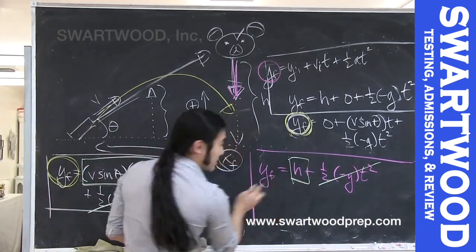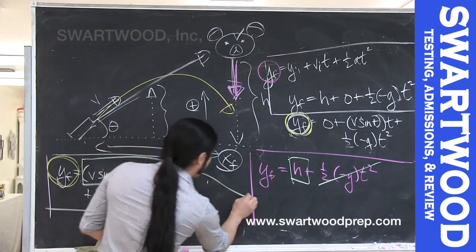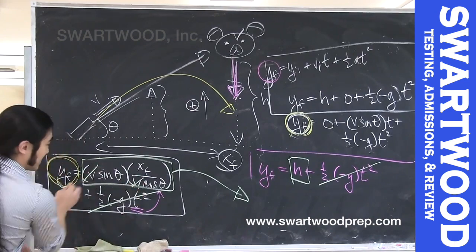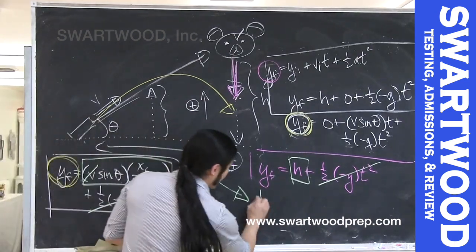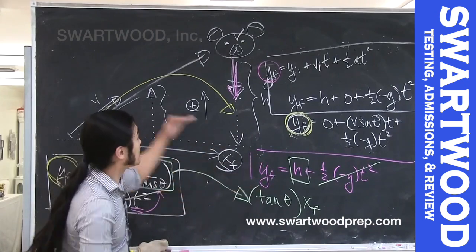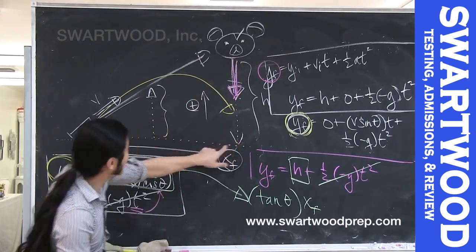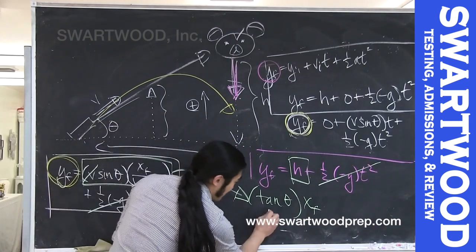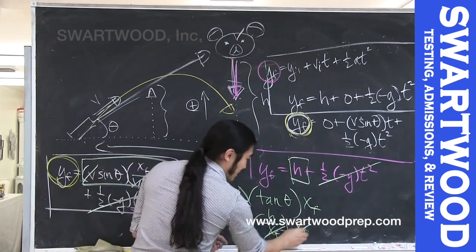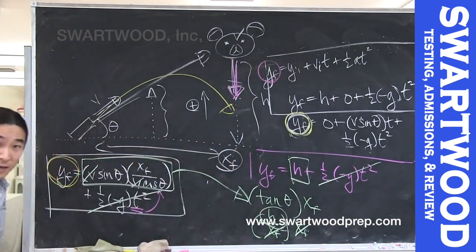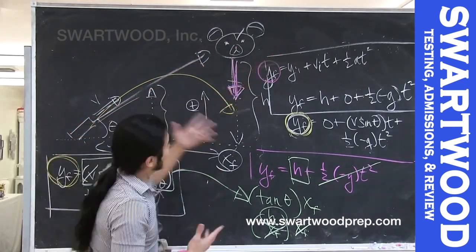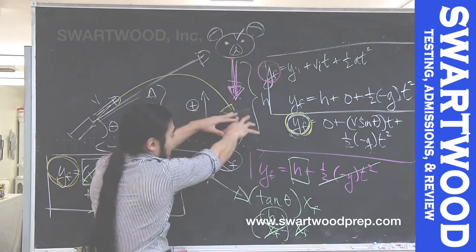So all we need is: (v·sinθ / (v·cosθ))·x_final = h. The two v's cancel, and sine over cosine is tangent, giving us tanθ · x_final = h. But tangent is opposite over adjacent — opposite is h, adjacent is x_final — so tanθ · x_final equals x_final · (h / x_final) = h. It works out. Intuitively, if there were no gravity the bullet would hit the bear; with gravity, both the bullet and the bear are pulled down by the same amount, so they still meet.